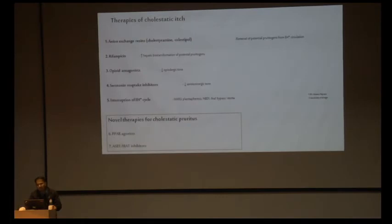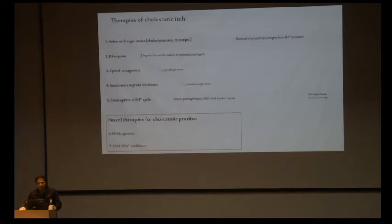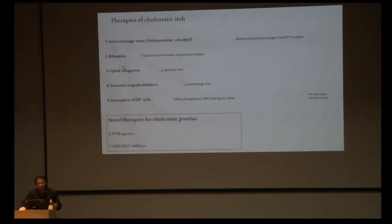Coming to the age-old therapies for cholestatic pruritus: the first and only approved drug is cholestyramine, an anion exchange resin. It removes pruritogens from the enterohepatic circulation by binding to bile salts in the bowel. Rifampicin increases the biotransformation of potential pruritogens and decreases CYP7A1, the rate-limiting enzyme for bile salt synthesis. Opioid antagonists decrease the opioidergic tone in nerve fibers, increasing the pain sensation threshold.